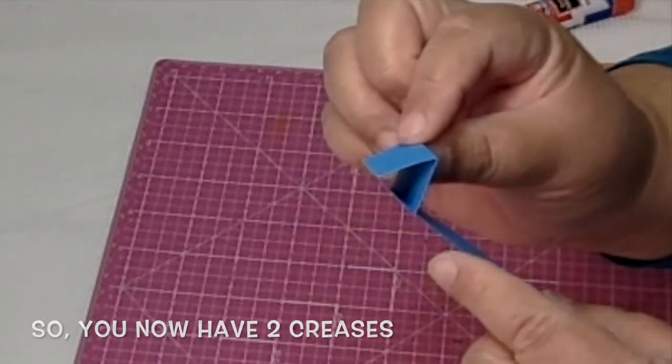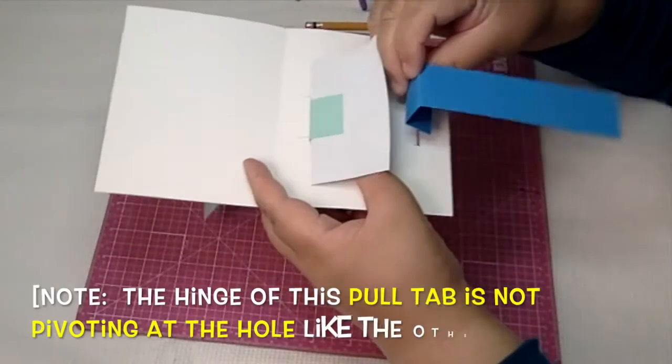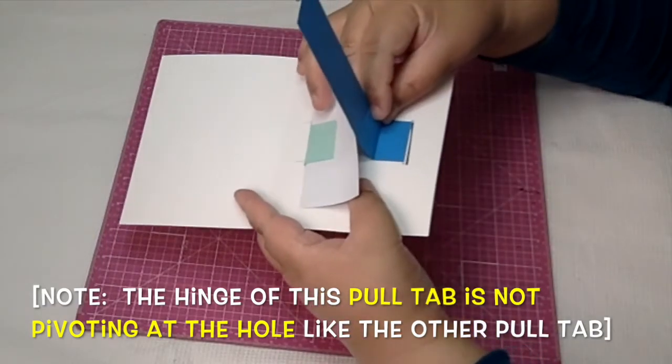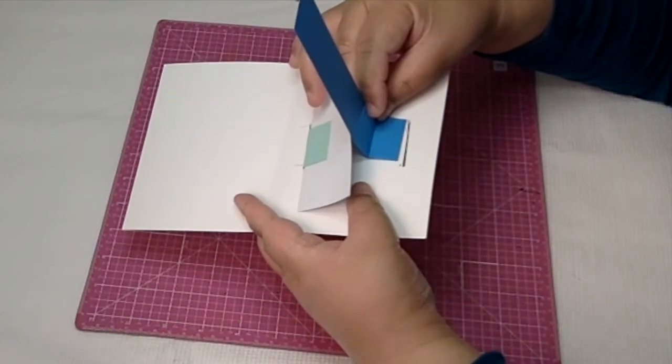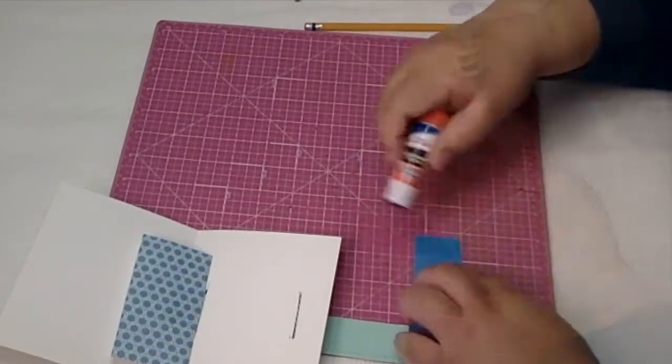Okay, just keep in mind that with this kind of pull tab, the pivot point is no longer at the hole. I'll show you that later, but just keep that in mind.